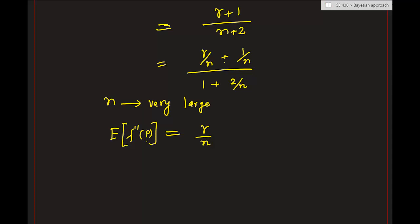To summarize: in this lecture we discussed how to apply the Bayesian method when the parameter is a continuous random variable. The steps are: first assign a prior distribution, then determine the likelihood function, and finally compute the posterior distribution.